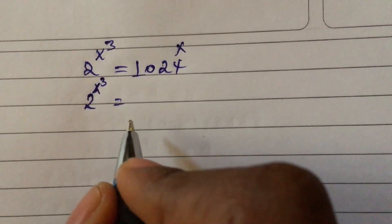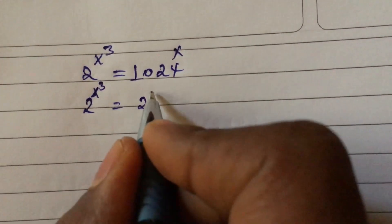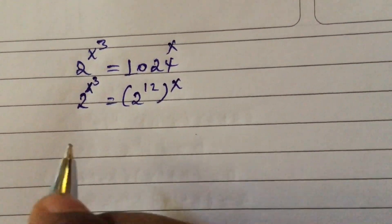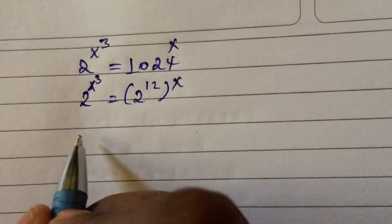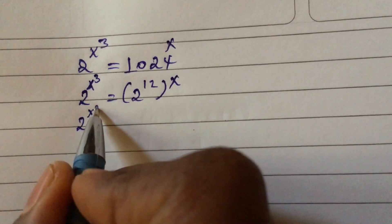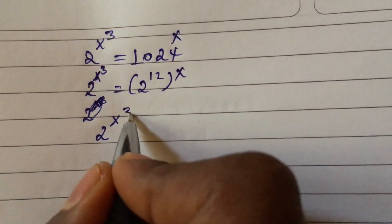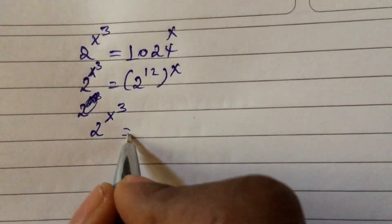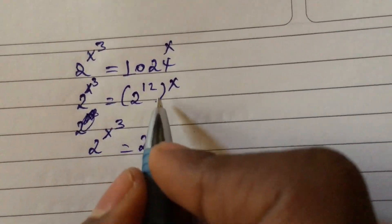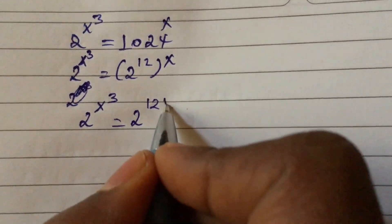Equal to—here 1024 equals 2 to the power of 12—times x. Our equation will be 2 to the power of x cubed equal to 2 to the power of 12 times x, 12x.